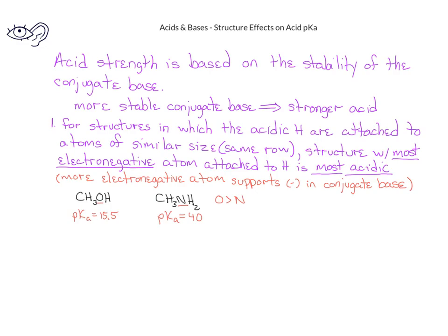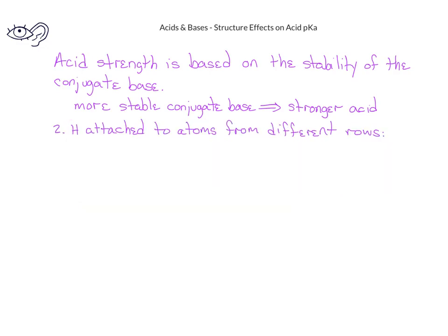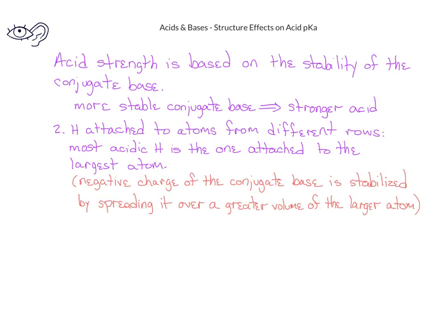The other situation involves compounds in which the acidic hydrogen is attached to atoms of very different sizes. This is generally the situation when the atom attached to the acidic hydrogen is from different rows of the periodic table. In this situation, the most acidic hydrogen is the one that's attached to the largest atom, the atom that is largest in size. The reason for this is that the negative charge of the conjugate base can be more easily spread over a greater volume in the larger atom.